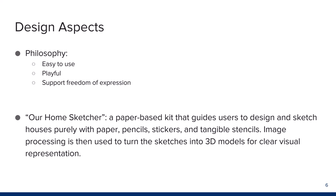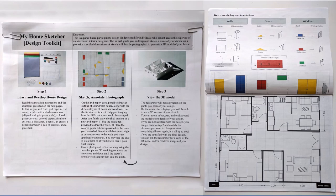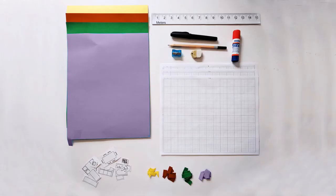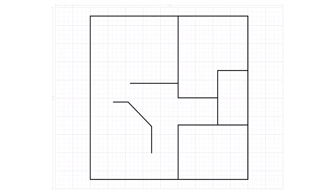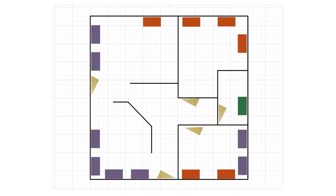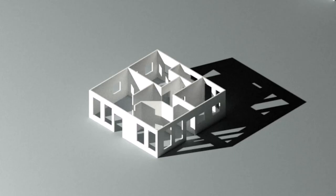Image processing is then used to turn the sketches into 3D models for clear visual representation. The interface is a 16-page kit with instructions on how to use the tool and sample designs, plus basic stationery such as white paper, construction papers, cutouts, and pencils. To use the tool, you start with a white paper that has a scaled grid for reference, sketch the outline of the house in plan view, then add stickers for openings — a triangle is a door and a rectangle is a window. You then take a picture of the sketch and run it through a computer program we developed that identifies colors and shapes to generate a 3D model.